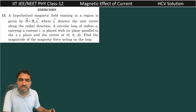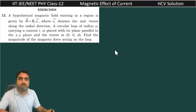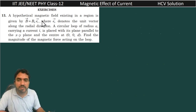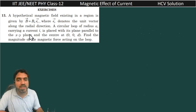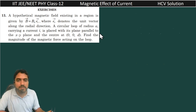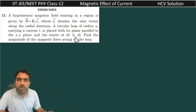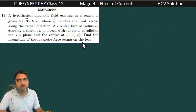Hello my dear students, now the next question, question number 13. A hypothetical magnetic field exists in a region given by B vector equal to B₀ ER vector, where ER denotes a unit vector along the radial direction. A circular loop of radius A carrying current I is placed with its plane parallel to the XY plane and the center at (0, 0, D). Find the magnitude of magnetic force acting on the loop.